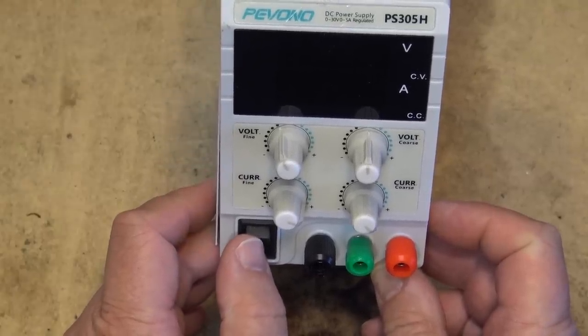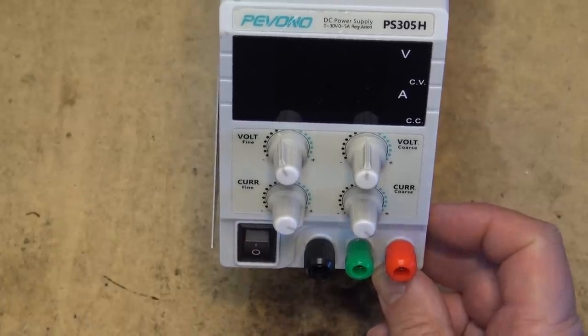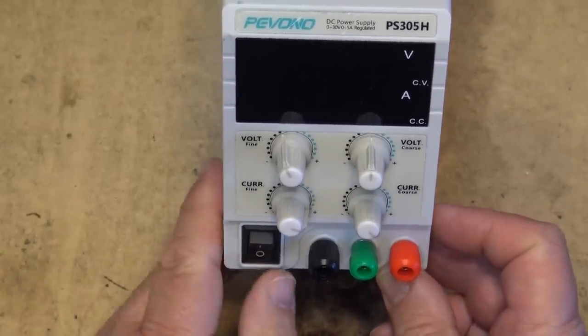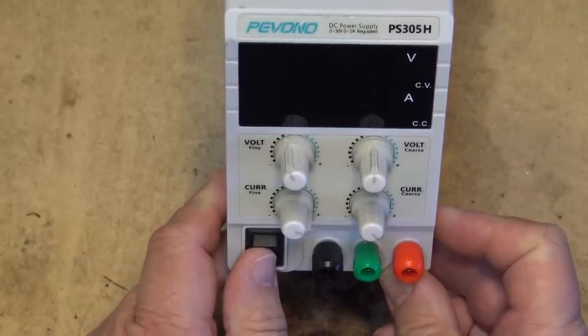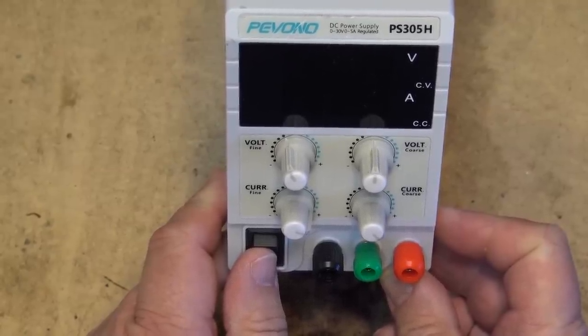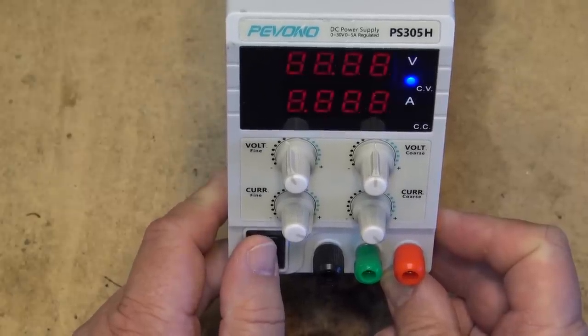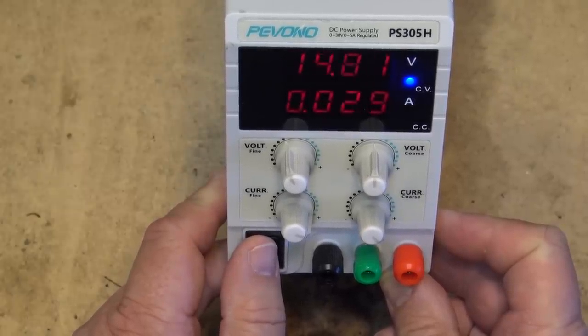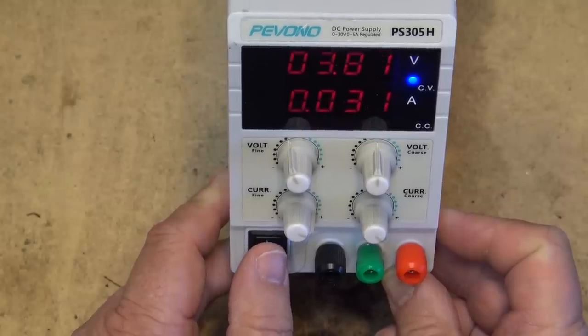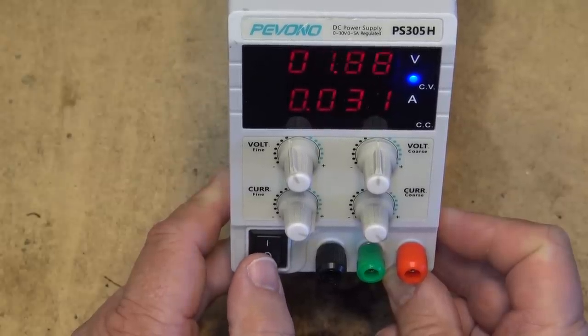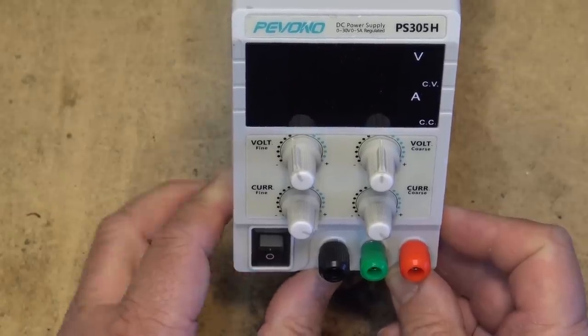It worked fine until one day when I had a little bit of an oops. If you remember the day I was working on that TV with the backlight, I put this power supply in series with my other power supply because I wanted 50 odd volts. This one didn't like it and ended up going pop. So let's see what's wrong with this one.